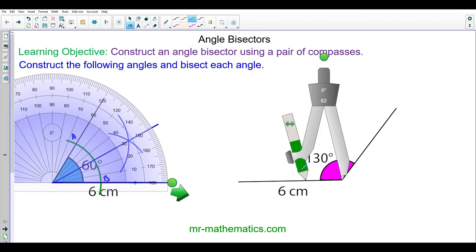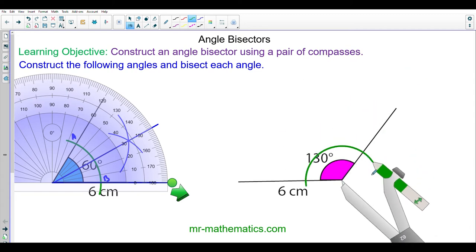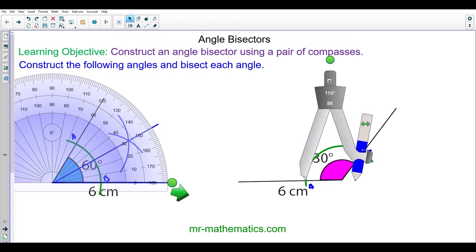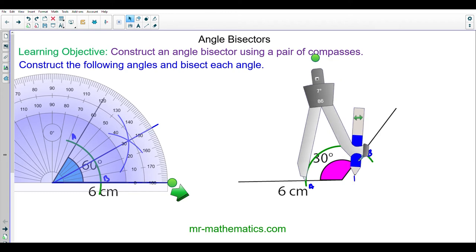So if you remember, the first thing we're going to do is draw an arc between the two lines. Now I'm going to label where the arc crosses the two lines with A and B. Next, I'm going to create two arcs, one from A and one from B.